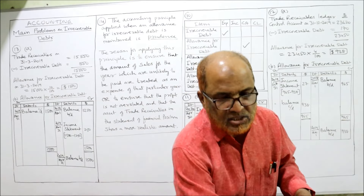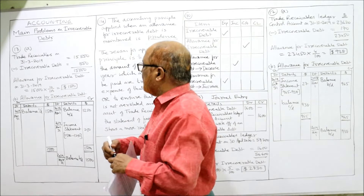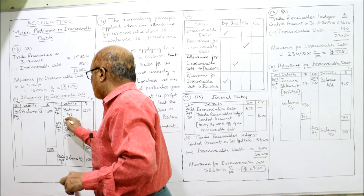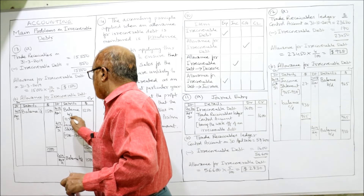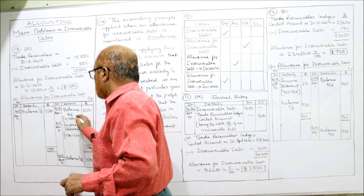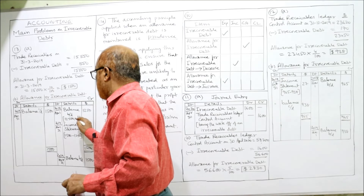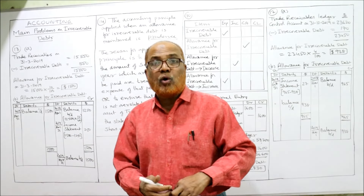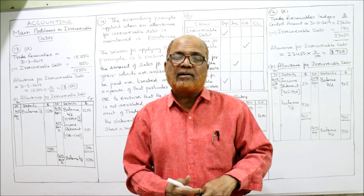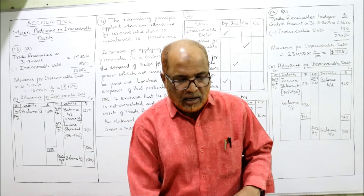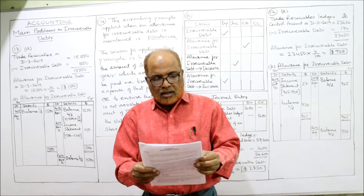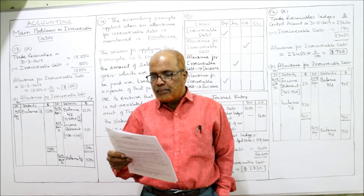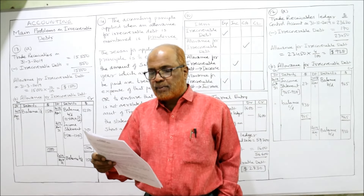So the opening balance of the allowance for irrecoverable debt is $1,250. That is 12,500 × 10/100 = $1,250. This is the opening allowance. Now, Neha maintains an allowance for irrecoverable debt at 10% of trade receivables.